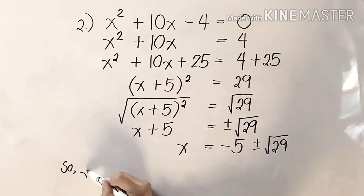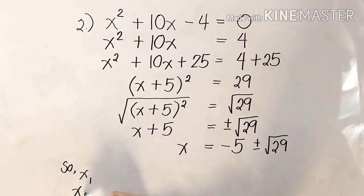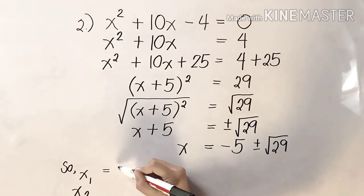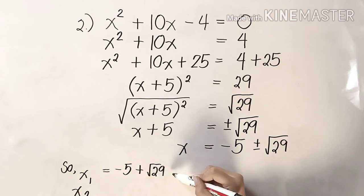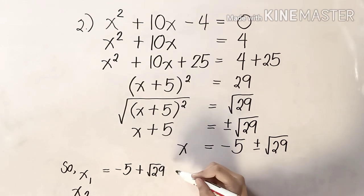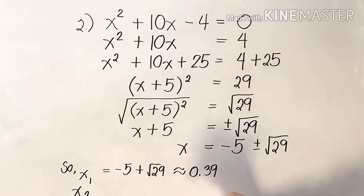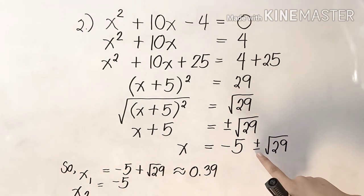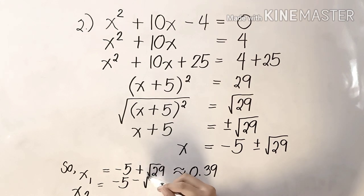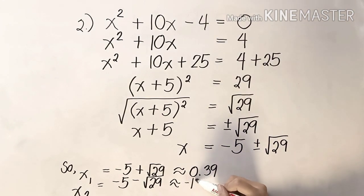Our final answers are: x₁ equals negative 5 plus square root of 29, which is approximately 0.39. And x₂ equals negative 5 minus square root of 29, which is approximately negative 10.39.